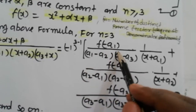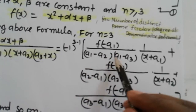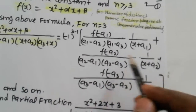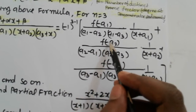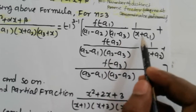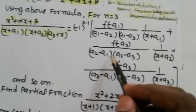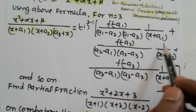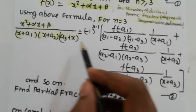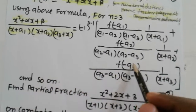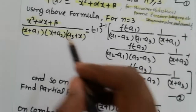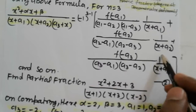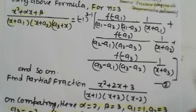The first term is f of minus a1 divided by (a1 minus a2)(a1 minus a3), dot 1 upon (x plus a1). The second term is f of minus a2 divided by (a2 minus a1)(a2 minus a3), dot 1 upon (x plus a2). And the third term is f of minus a3 divided by (a3 minus a1)(a3 minus a2), dot 1 upon (x plus a3).